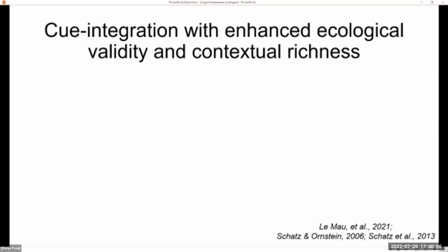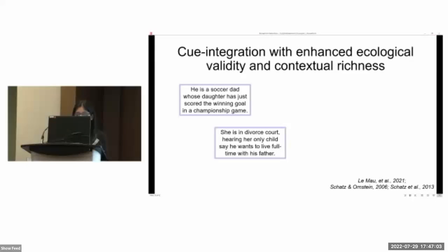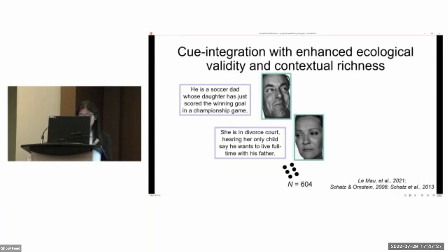All right, so to achieve our goals, we basically used an archival data set that was collected by Limau and colleagues that includes a more diverse set of descriptions of social situations and portrayals of those situations by professional actors. So for example, the top portrayal here is for a situation where a soccer dad sees his daughter win a goal or a winning goal in a championship game. And there were a total of 604 such pairs of facial portrayals and situational outcomes that likely provide more complexity and realism of people's real lives.